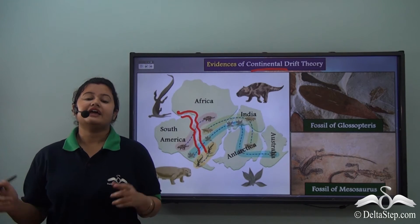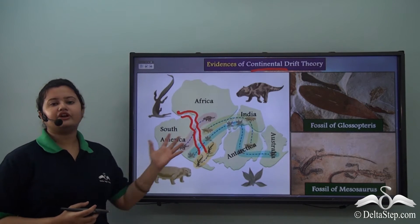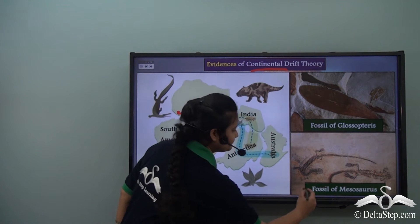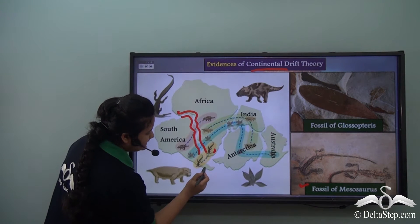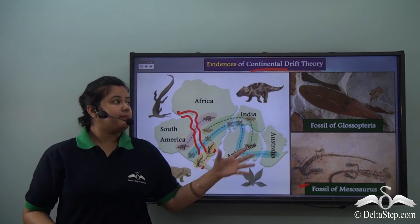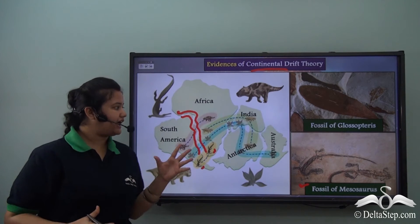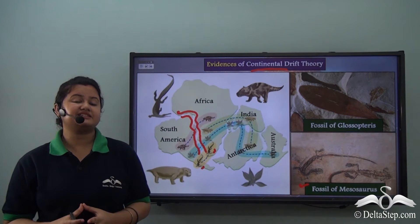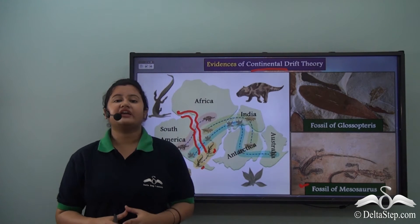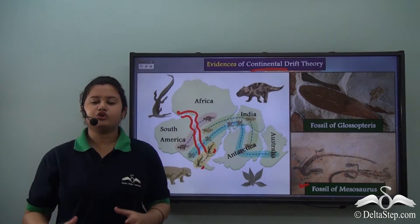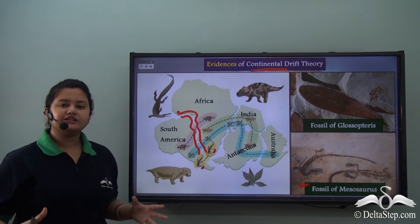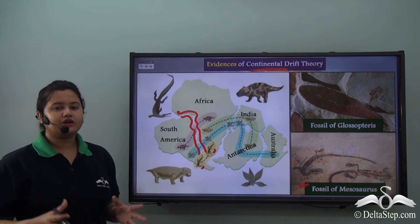Wegener discovered fossils of the same flora and fauna in different continents. For instance, the fossil of Mesosaurus was found both in Africa and South America as you can see in this picture. Mesosaurus is an extinct reptile which could not have crossed the vast Atlantic Ocean present between these two continents owing to its body structure. From this we can conclude that Africa and South America were not separated and there was no Atlantic Ocean between them.